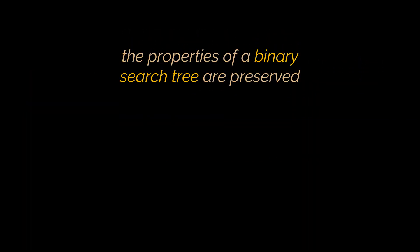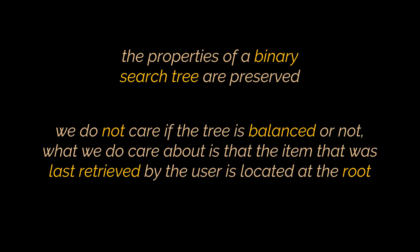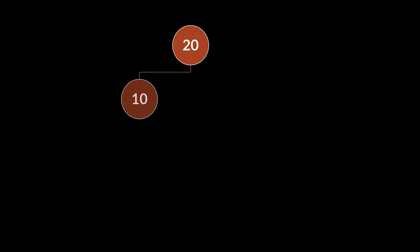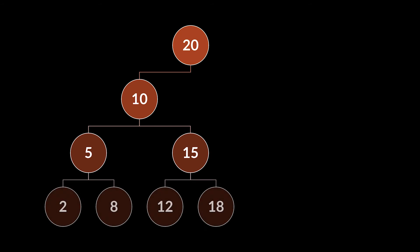All the properties of a binary search tree are preserved, as splay trees are themselves binary search trees. However, in splay trees we do not care if the tree is balanced or not. What we do care about is that the item last retrieved by the user is located at the root. So we may have an unbalanced tree and that's totally fine, as long as the most frequently accessed elements are near the top.